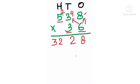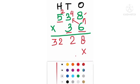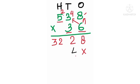Now 3 is on the 10s place, so we are not going to write anything on the 1s place — put a cross or a 0. Multiply 3 by 8: 3 eights are 24 — write 4 and carry 2 to the 10s place. Now multiply 3 by 3: 3 threes are 9, plus the carry of 2 gives 11 — write 1 and carry 1 to the 100s place.